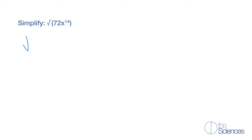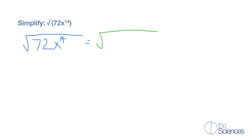Simplify the square root of 72x to the 14th power. We can break down 72 into a perfect square times another factor — for example, 36 times 2, because 36 times 2 is 72 and 36 is a perfect square.